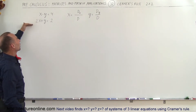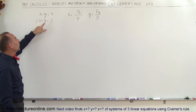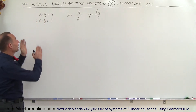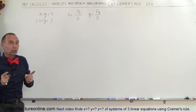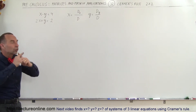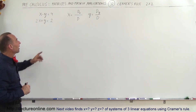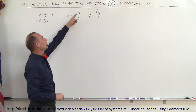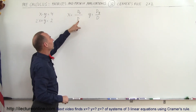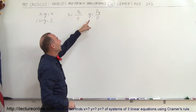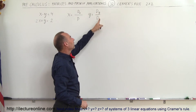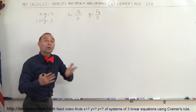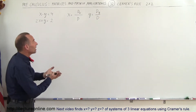We have two linear equations and we want to solve for x and y so that the values of x and y will satisfy those two equations simultaneously — it's the solution where the two lines cross. To find the x value we take D sub x divided by D, and to find the y value we find D sub y divided by D.